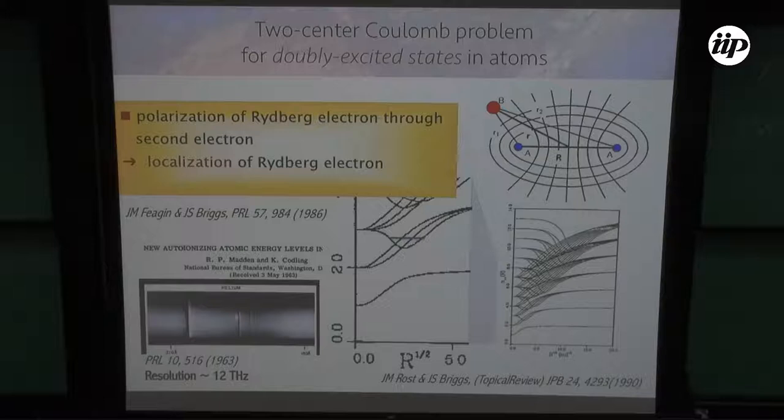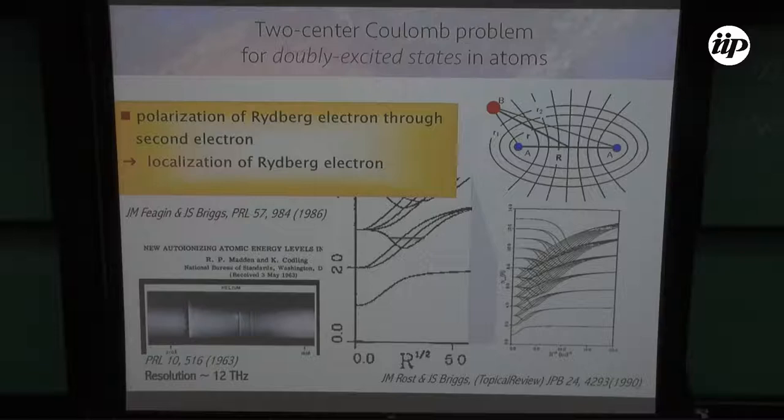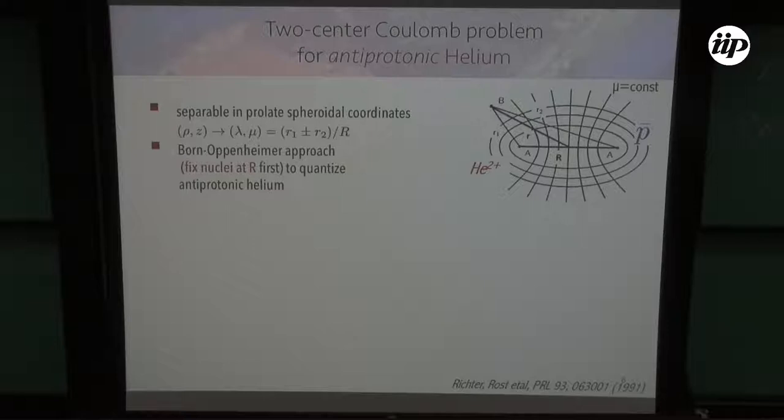Now we can look at it in another way: you break the degeneracy of a Rydberg atom — this together is still one Rydberg atom — by the presence of the second electron. That forces the first electron to be much more localized in a certain structured state than it would be if it had all its degeneracy available. That will be an important scheme for the rest of the talk.